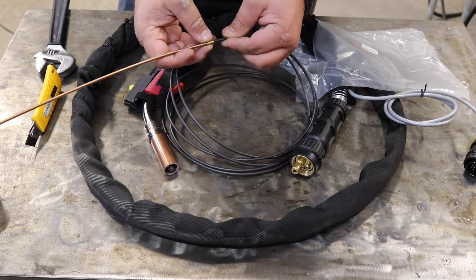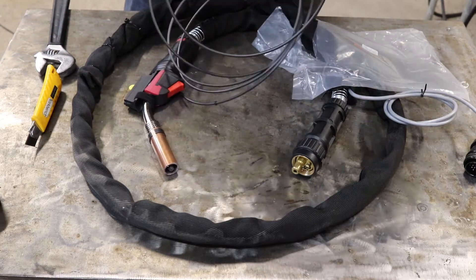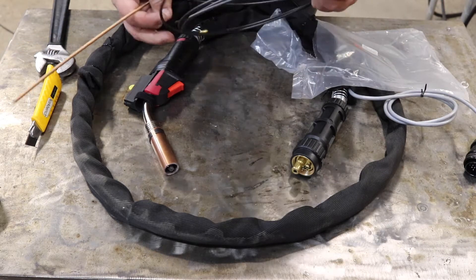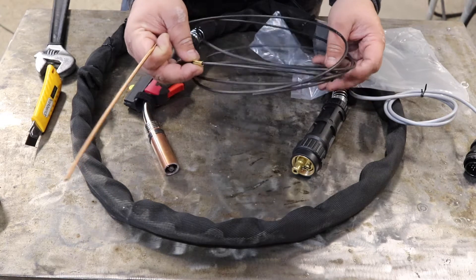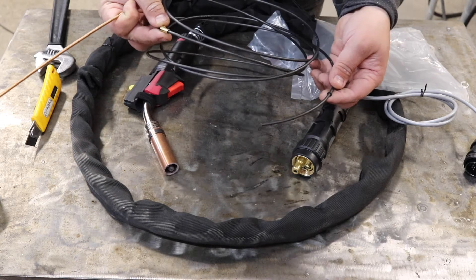This piece here just screws right onto the end of the liner. Make sure it's properly seated. Then at the end it will have a new crush collet and a new o-ring to seal the gas.